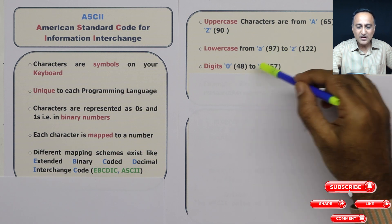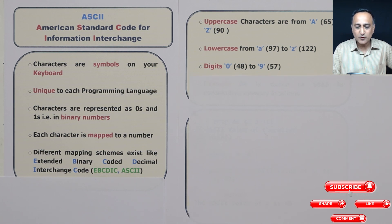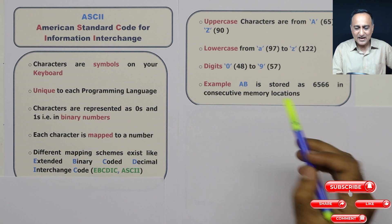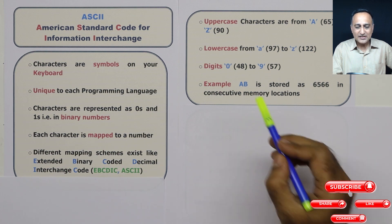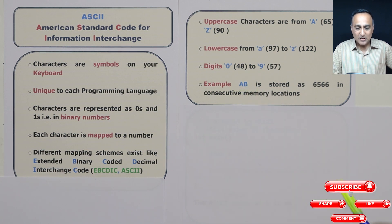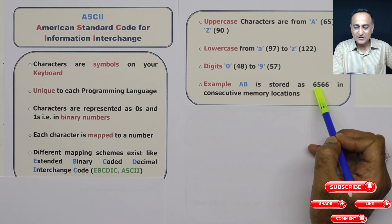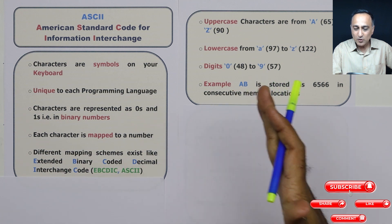I've given you decimal numbers so that we can understand the values, because if I show you in terms of ones and zeros it is impossible to tell whether it is 65, 90, and so on. Digits are represented starting from 48 to 57, so character 0 is 48 and character 9 is 57. Now suppose I have a combination A and B to be stored in memory one after the other. We know a single character occupies one byte, so A will occupy one byte and B will occupy one byte. A will be stored as 65 and B will be stored as 66, both converted into binary and stored in consecutive memory locations.